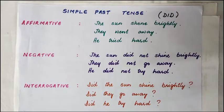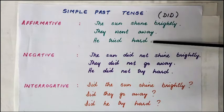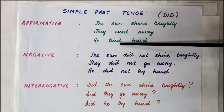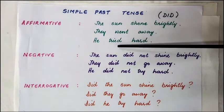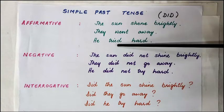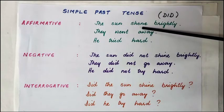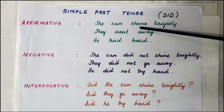Let's go back to what we learnt last time. 'The sun shone brightly.' 'They went away.' 'He tried hard.' 'Shone,' 'went,' and 'tried' are the verbs in each sentence — in the second form or simple past form — making the simple past tense. Supposing these sentences were to be changed into the past continuous: 'The sun was shining brightly.'